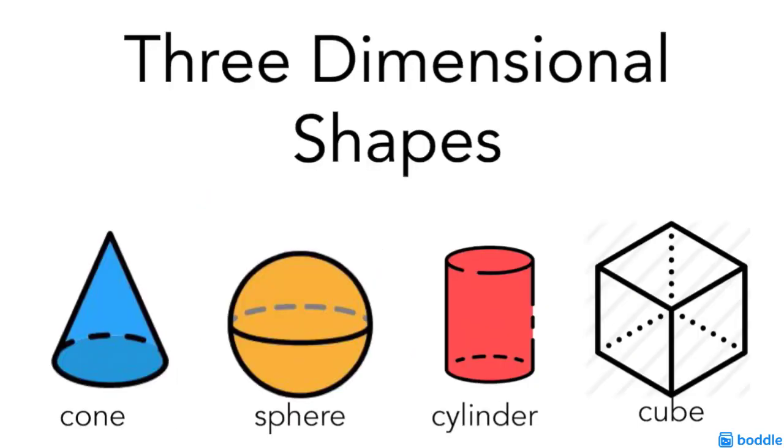like the cone, the sphere, the cylinder, and the cube - they are all 3D shapes. They have faces, vertices, and edges.